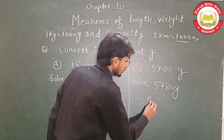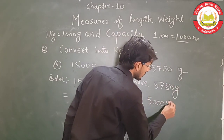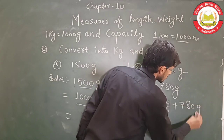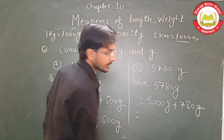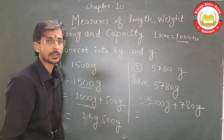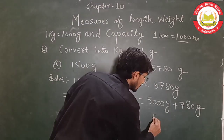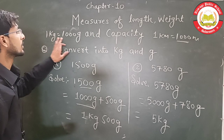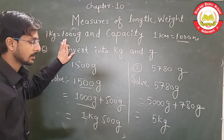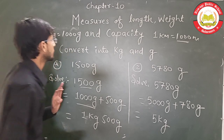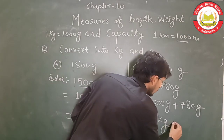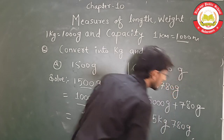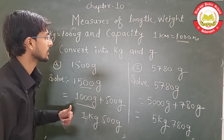Now let's solve: 5750 grams. We write it as 5000 grams plus 750 grams. Since 1 kg equals 1000 grams, 5000 grams becomes 5 kg, and 750 grams remains. So the answer is 5 kg 750 g. That is how you solve this kind of question.